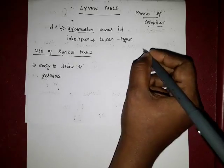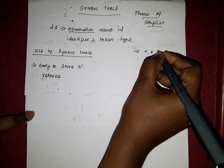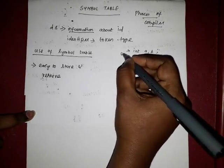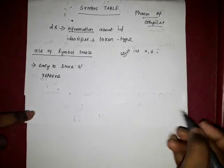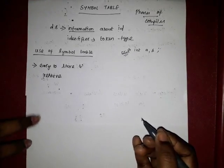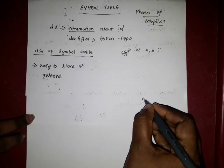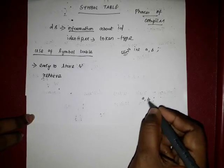For example, in the beginning of the program you can declare A and B. Maybe this is in the 5th line. In case of 50 or 100 lines, the same identifiers A and B may be used again. This identifier information will go again into the symbol table.